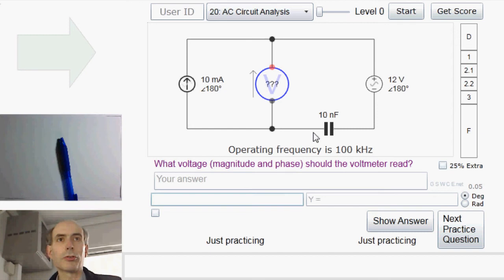Just using the standard formulas for the impedance of a capacitor. So, the voltage across this capacitor is the current, which is 10 mA at 180 degrees, multiplied by the impedance of the capacitor, which is 1 divided by j times omega, which is 2 times pi times 100 kHz here, times the capacitance, which is 10 nF. So, that, about 1.6 volts at 90 degrees, will be the voltage across this capacitor.